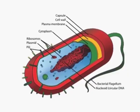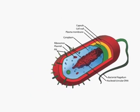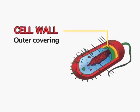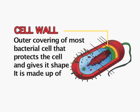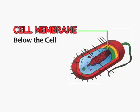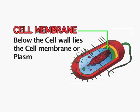Let us now study the various parts of this unicellular organism. They consist of an outer wall, as you can see in the diagram, known as the cell wall. The cell wall is made up of peptidoglycan, which is unique to bacteria only and is not found in plants, which also have a cell wall but it is not made of peptidoglycan. Below the cell wall lies the cell membrane or plasma membrane, which protects the cell and gives it its shape.